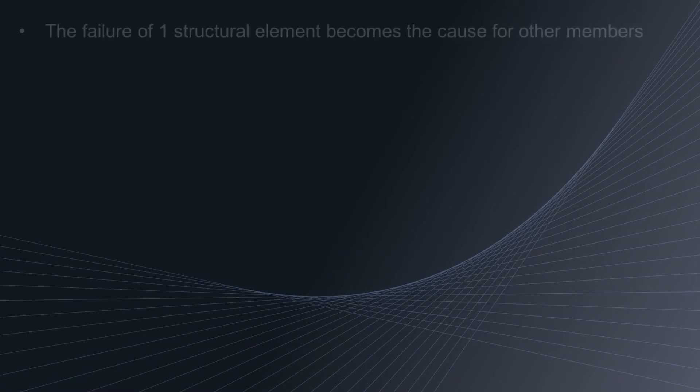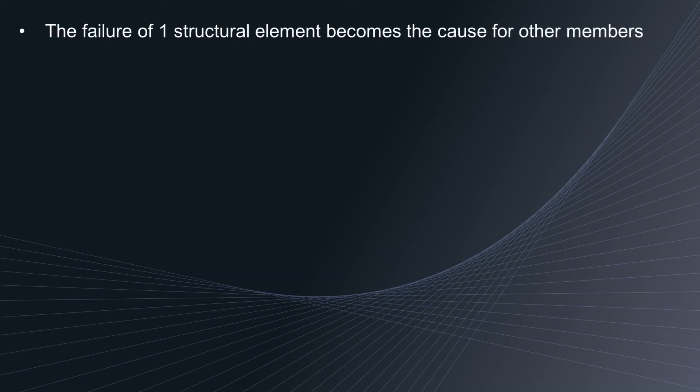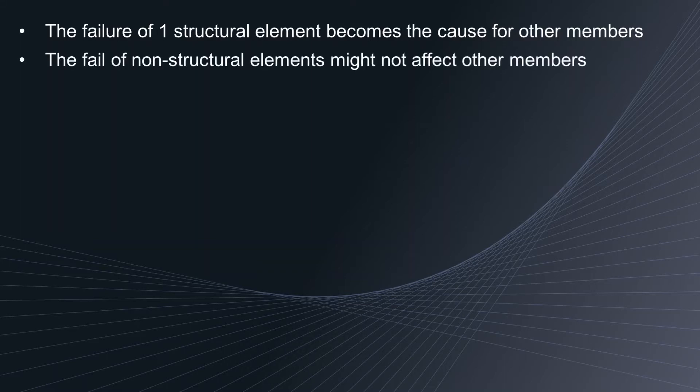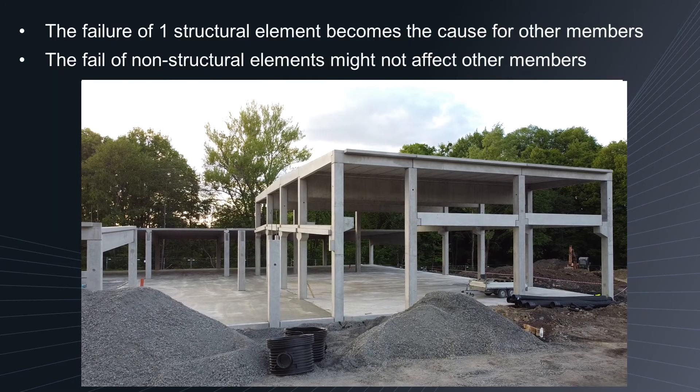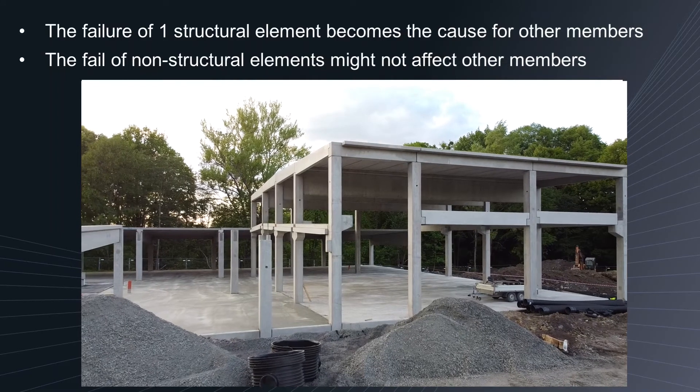The common nature of structural elements in a building is that the failure of one element becomes the cause for the failure of another. However, the failure of non-structural elements will not affect other members in the building. Additionally, structural elements are mostly constructed earlier than the non-structural elements.